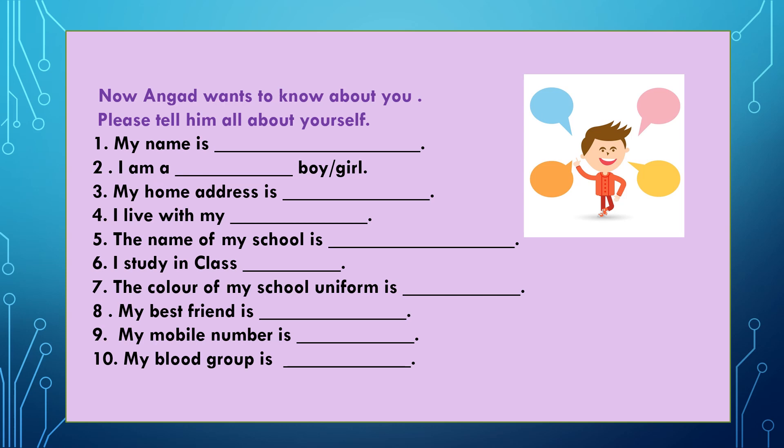You will also write your mobile number. You must remember your mobile number in case of emergency. And you will also ask your parents about your blood group. You will write down your blood group — whether it is A positive, B positive, negative, or O positive — in the blank provided.